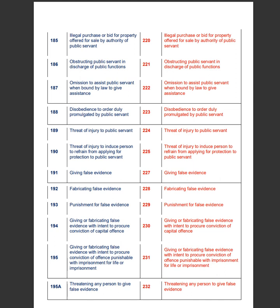Section 191 of the IPC deals with giving false evidence, whereas Section 227 of the BNS deals with giving false evidence. Section 192 of the IPC deals with fabricating false evidence, whereas Section 228 of the BNS deals with fabricating false evidence. Section 193 of the IPC deals with punishment for false evidence, whereas Section 229 of the BNS deals with punishment for false evidence.